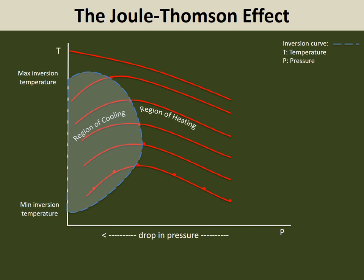Now, if we keep P1 constant but change the initial temperature T1 and repeat the previous process, we will come up with a series of curves with positive and negative slopes and maximum points. The line in blue that connects all maximum points is called the inversion line. Cooling occurs where the slope of the curve is positive. Heating occurs where the slope of the curve is negative.